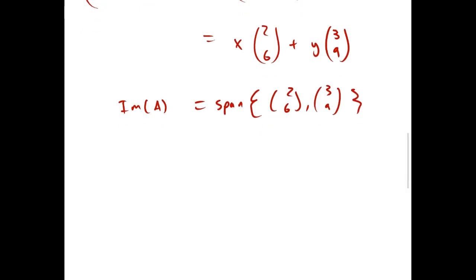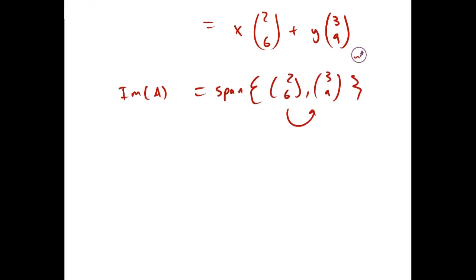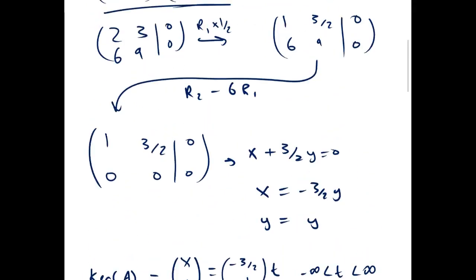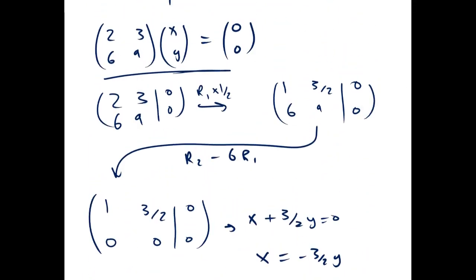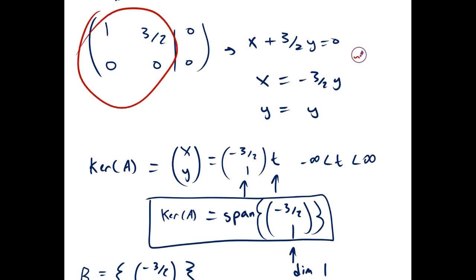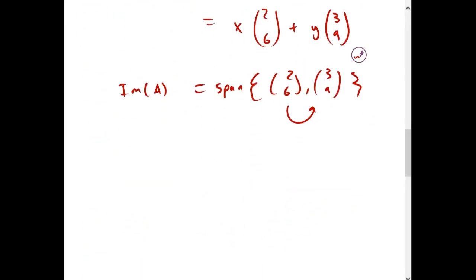Actually, one of these vectors is redundant — it's just a multiple of the other. You can tell because when we found the reduced row echelon form of that matrix, we got only one leading 1, so the second column is redundant. Specifically, it is 3 halves times the first column: (2, 6) times 3 halves gives (3, 9). So the image is the span of (2, 6). You could have also chosen (3, 9) — it doesn't really matter.